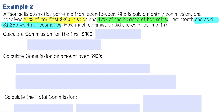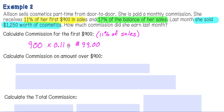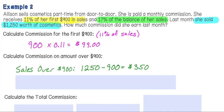The first thing we need to do is calculate the commission for the first $900. The commission rate for $900 or less is 11%, so that would be $900 times 11% in decimal form, giving her $99 for the first $900 in sales. We then calculate the commission on sales over $900. Sales over $900 would be $1,250 minus $900, which is $350.